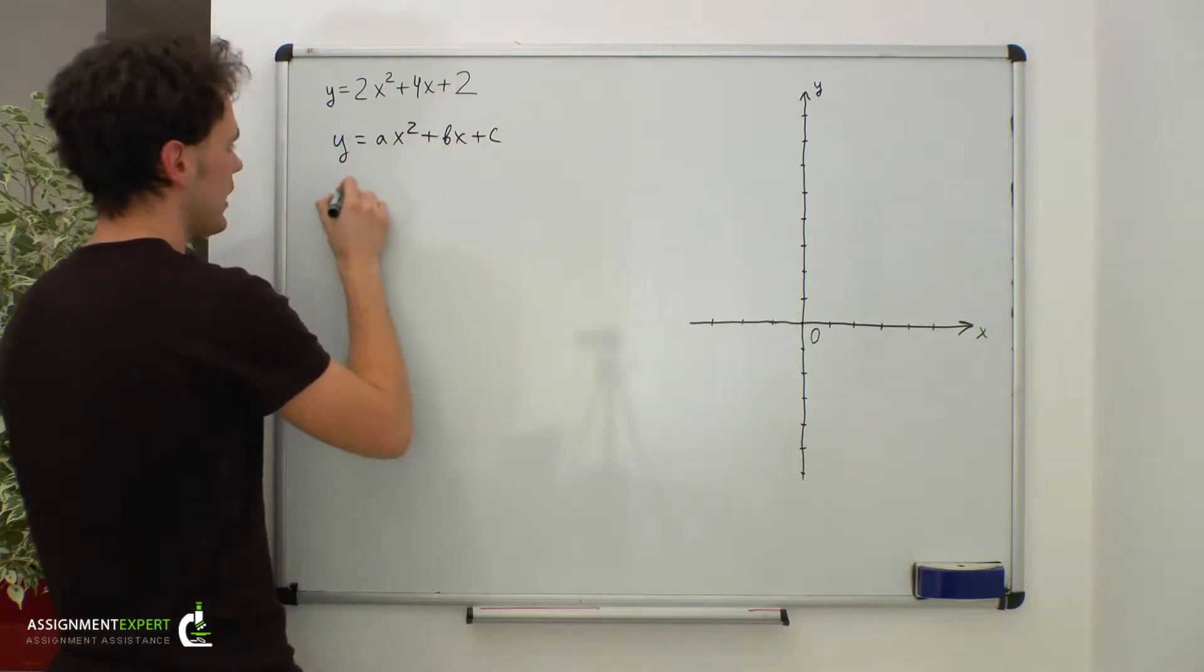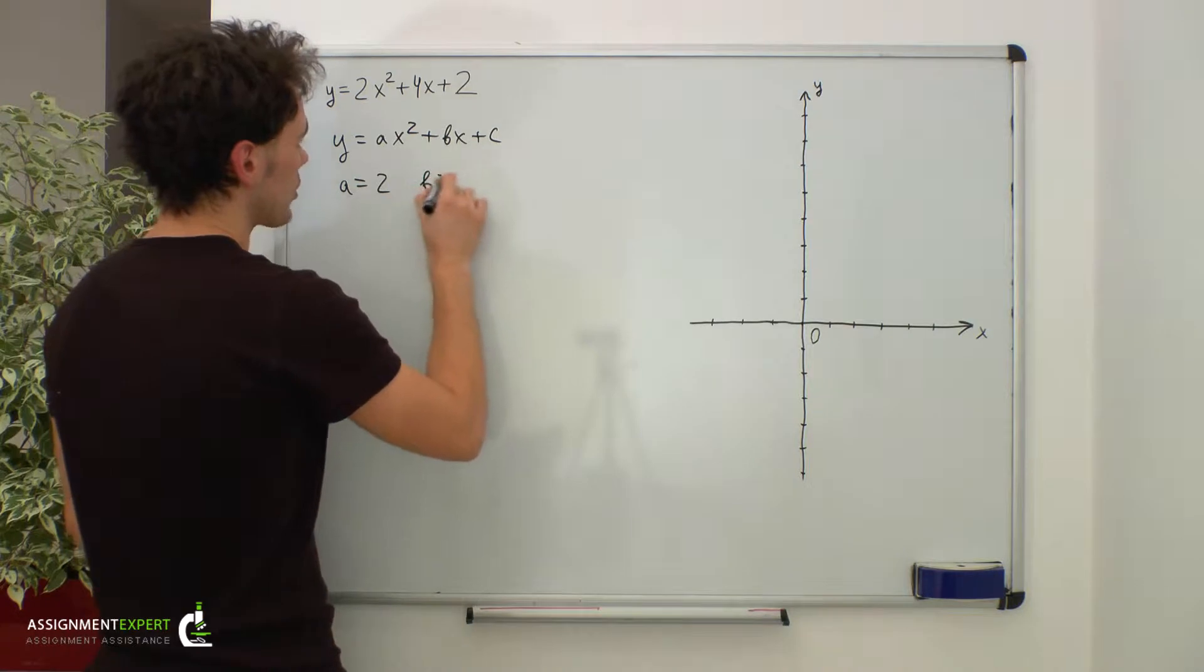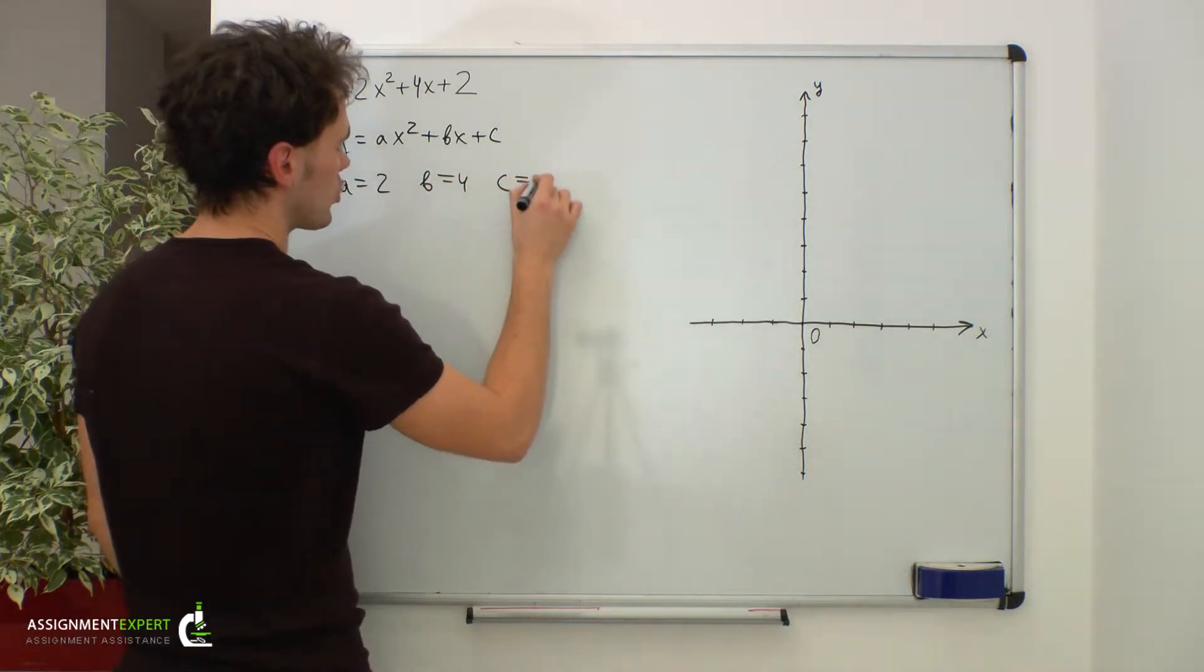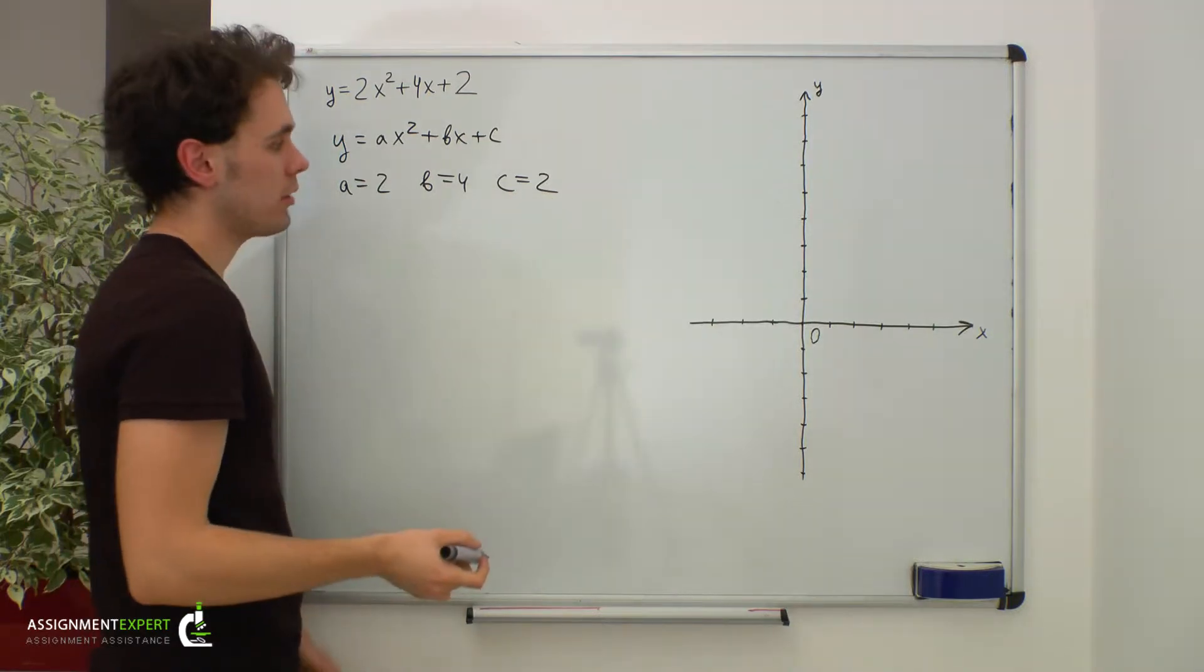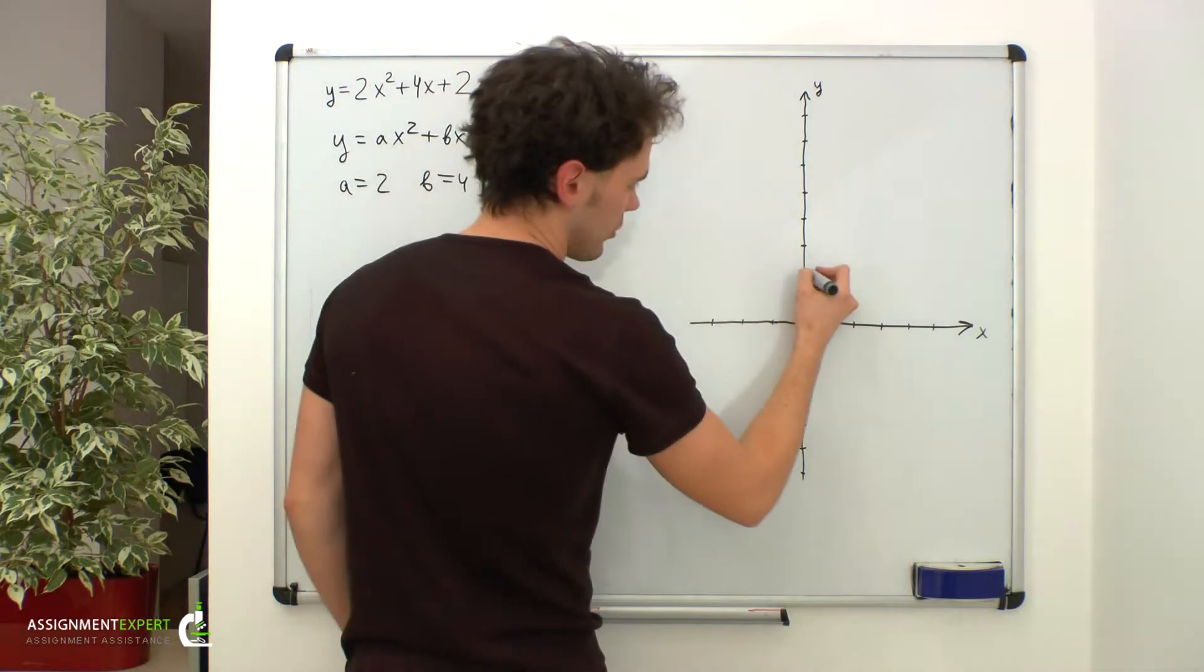y equals ax squared plus bx plus c. In our case a is equal to 2, b equals 4 and c equals 2. c equals 2 is the y-intercept of the parabola, so we can right away mark it right here.